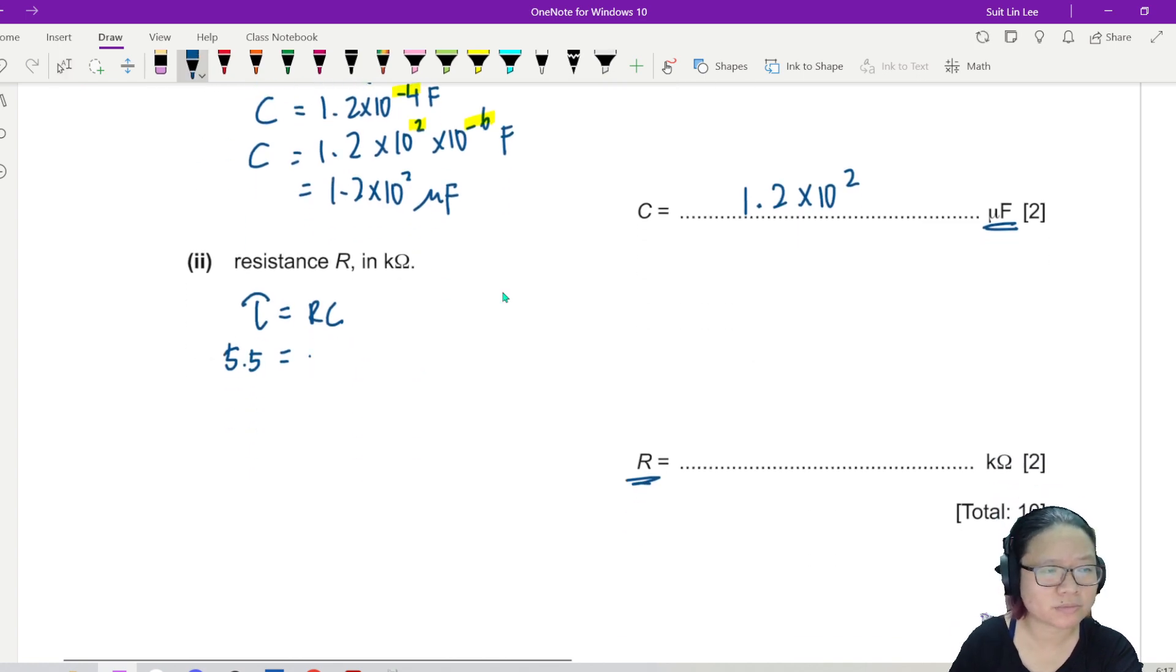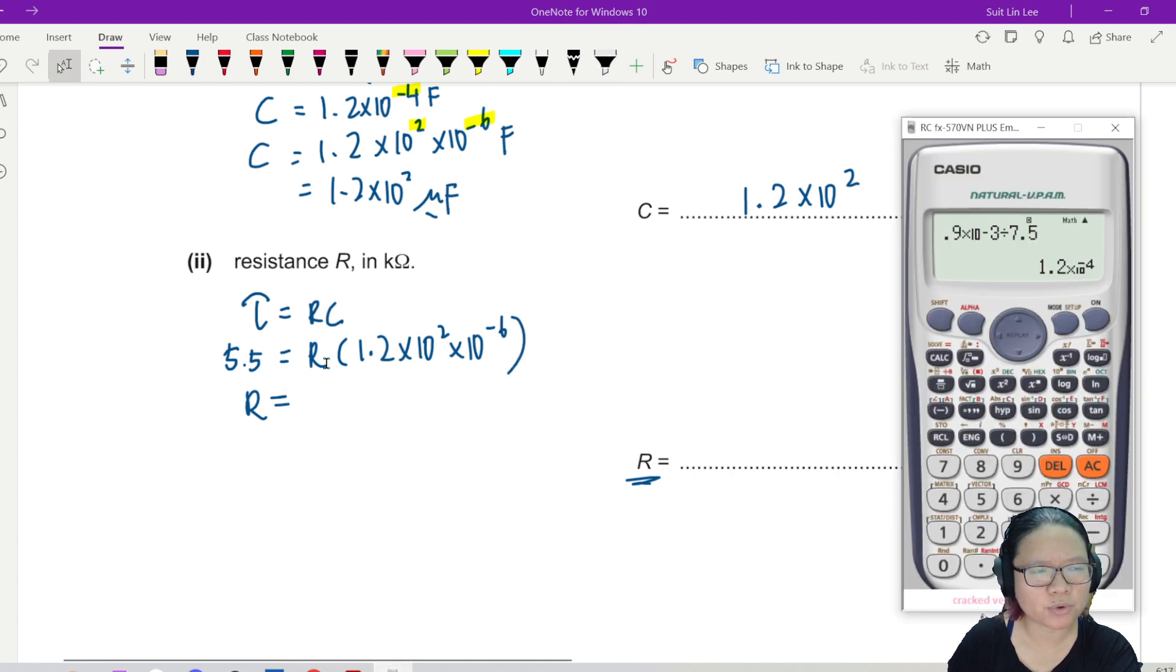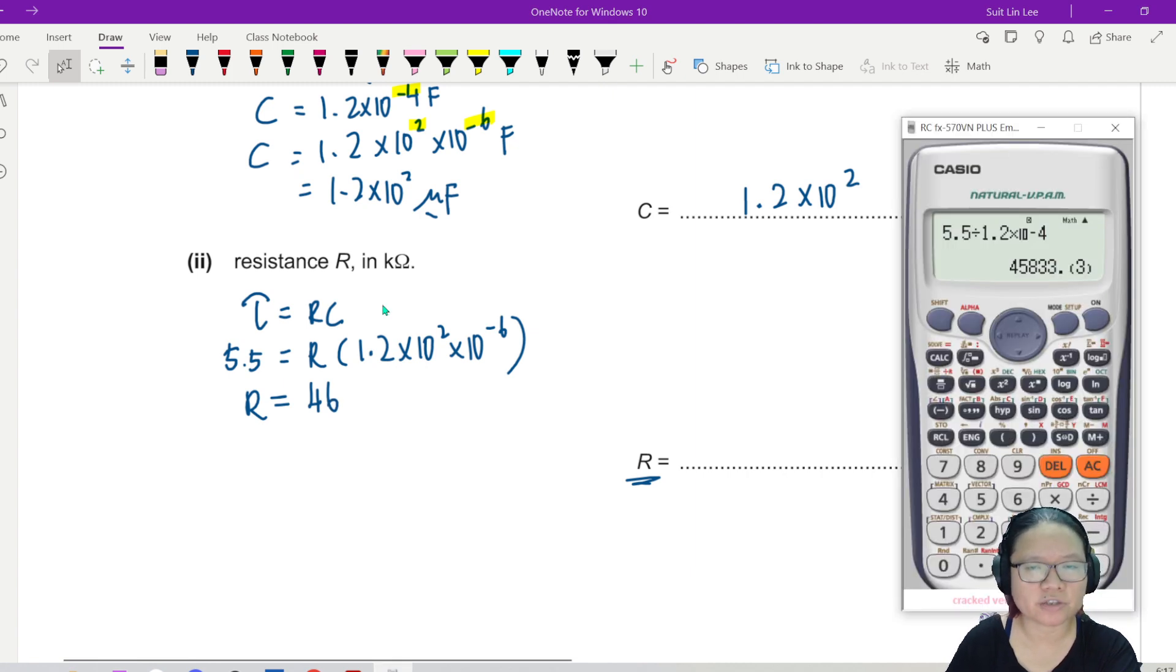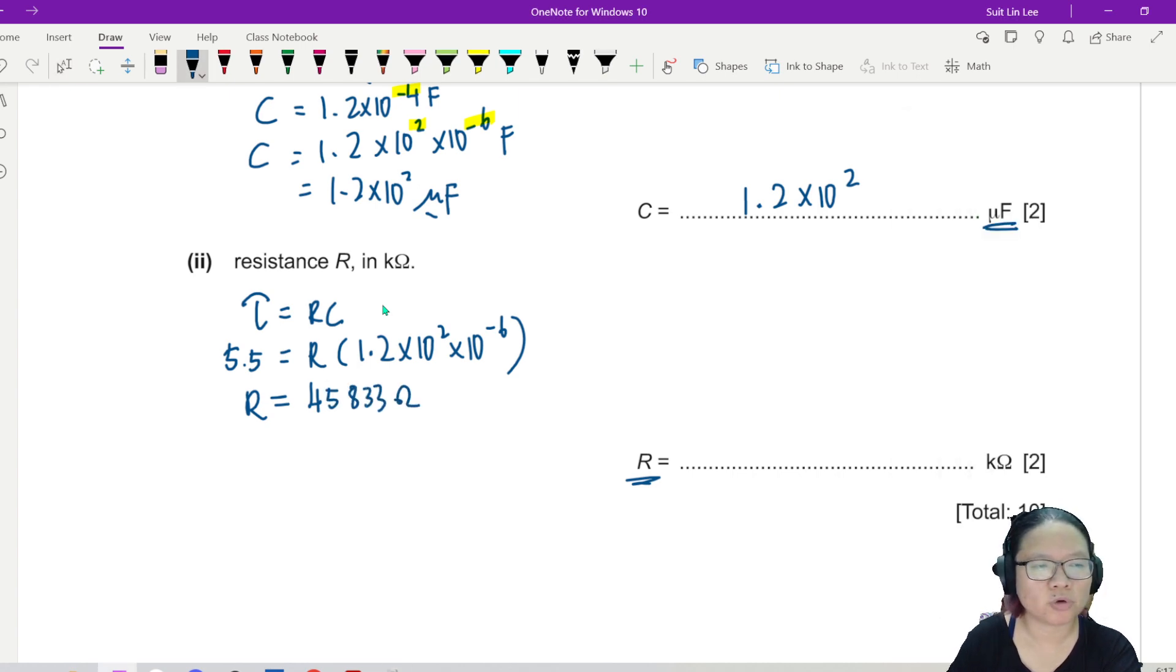Finally, we are looking for R. So we have τ = RC. We have 5.5 = R × 1.2 × 10^(-4). So we can find R. It's not 10^2, right? Because of the micro, times 10^(-6). R is more kind of sus. R should be quite big, like kilo. Anyway, 5.5 divided by 1.2 × 10^(-4) = 4.58 × 10^4. So I guess in kilo, this will be 45.8 or 46 kilohms.